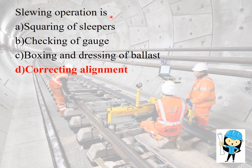Sloughing operation means correcting the alignment of the railway tracks. The alignment will be checked from a distance of 25 to 30 metres.